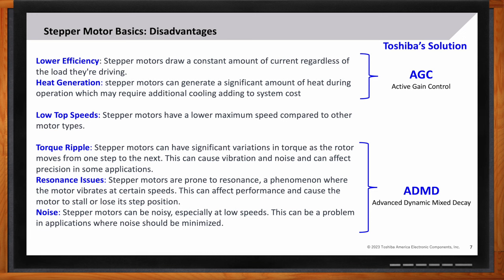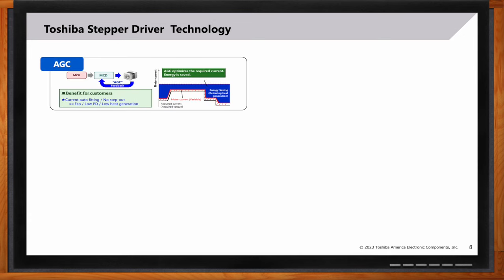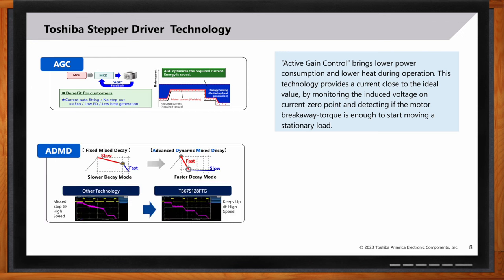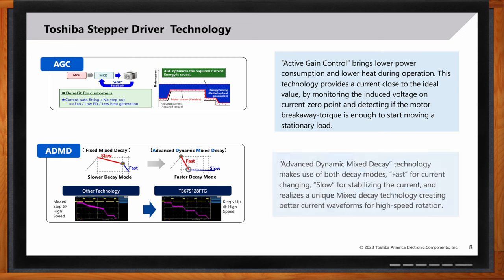All right. So, Doug, let's talk more about that. What are these technology solutions that Toshiba offers to help address these disadvantages? Sure. Active gain control is a technology that allows us to reduce power consumption. We monitor and reduce the current drive depending on the actual torque required. The advanced dynamic mix decay technology is a mechanism that we have for switching between fast and slow decay to get better current waveforms, particularly in a high-speed operation. So, can we talk in a bit more depth about that active gain control? Sure.